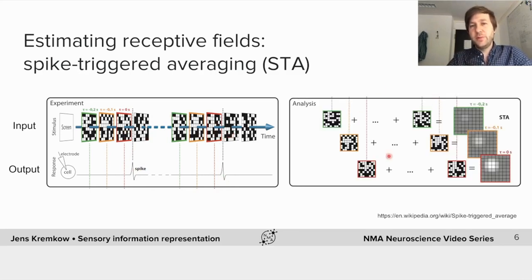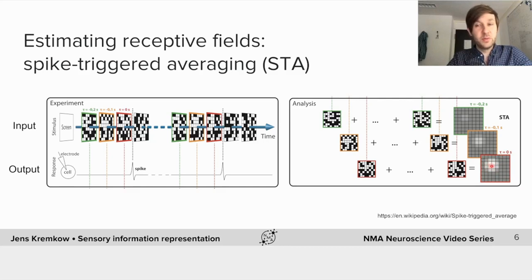This is shown on the right, where we have a number of different spikes and over time, on average, we can see the receptive field. So this is the visual stimulus, and on average this example neuron responds to that localized part in the visual field. This approach is very common in visual neuroscience.